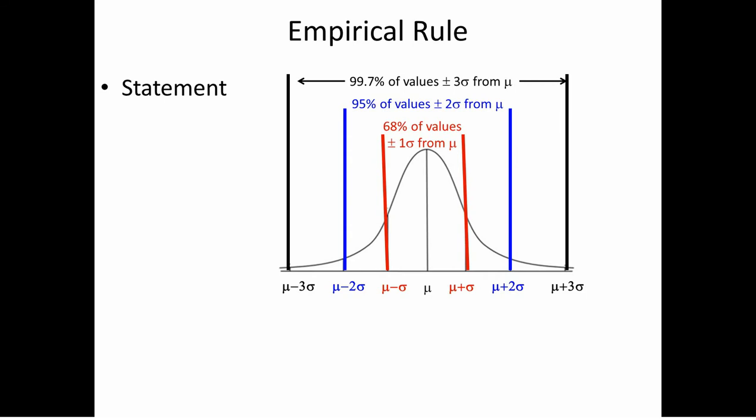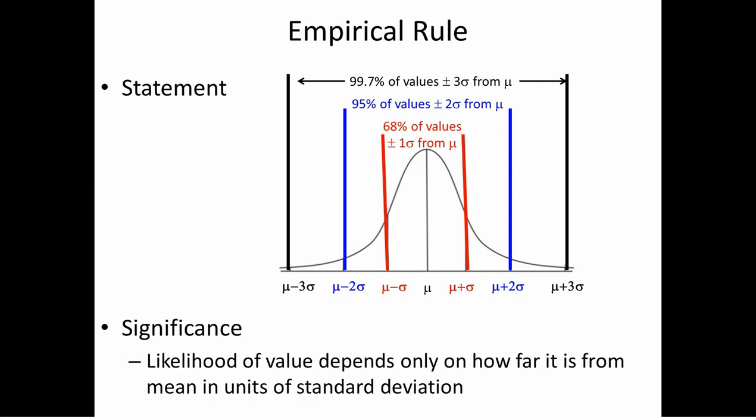Notice something very important about the empirical rule: it doesn't depend on the values of mu and sigma. It is a universal law. No matter what mu and sigma you have, the empirical rule is obeyed for every normal distribution. The likelihood of a value depends on how far it is from the mean in units of standard deviation — this is the practical significance of the empirical rule.